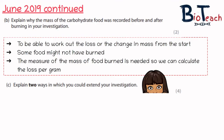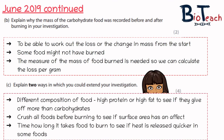Part C said: explain two ways in which you could extend your investigation, again for four marks. You could test foods of different composition — this experiment tested carbohydrate-rich foods, but you could extend it by testing foods high in protein or fat to see if they give off more heat. Another extension is to crush all the foods before burning so they're in powder form, to see if surface area has an effect on burning. You could also time how long it takes for food to burn to see if heat is released quicker in some foods.